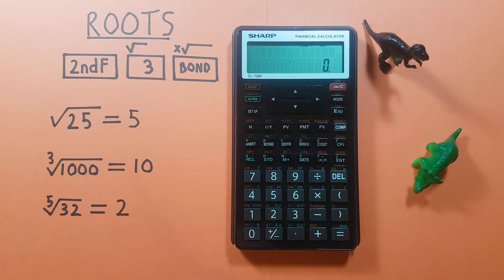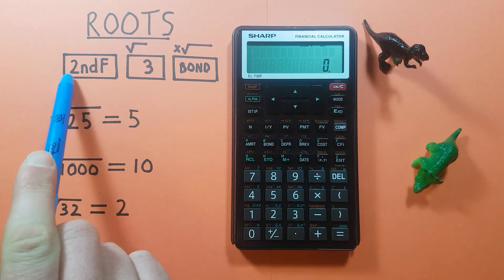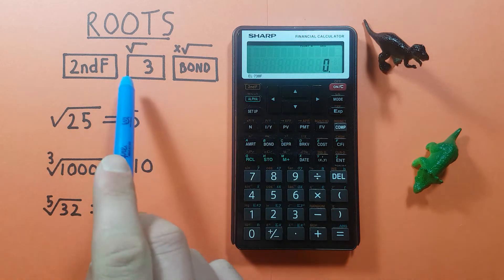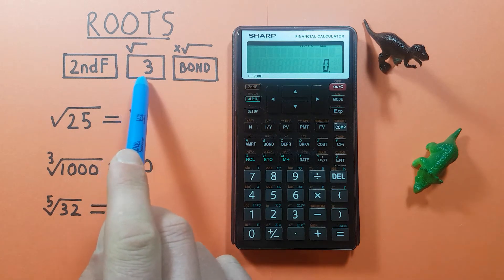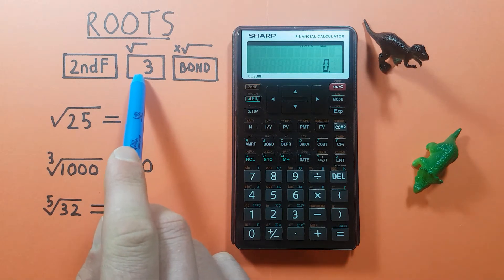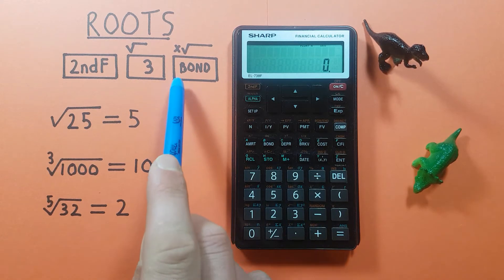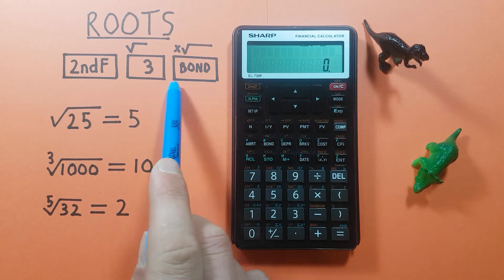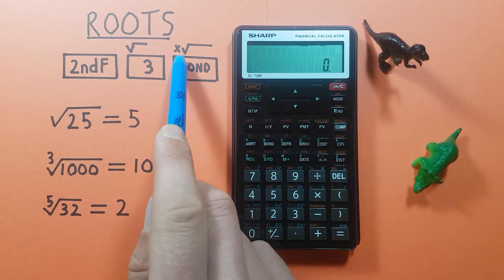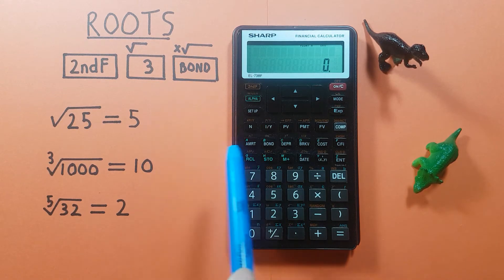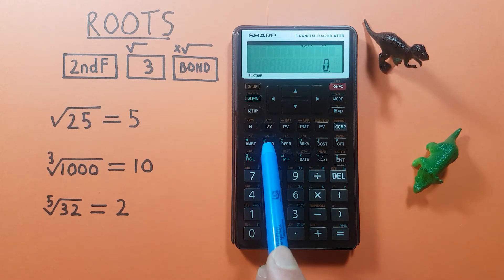To do this we'll use the second function key, located here in the top left corner, the 3 key with the second function of square root, located here, and the bond key with the second function of x-root, located here. It's got that green B on it.